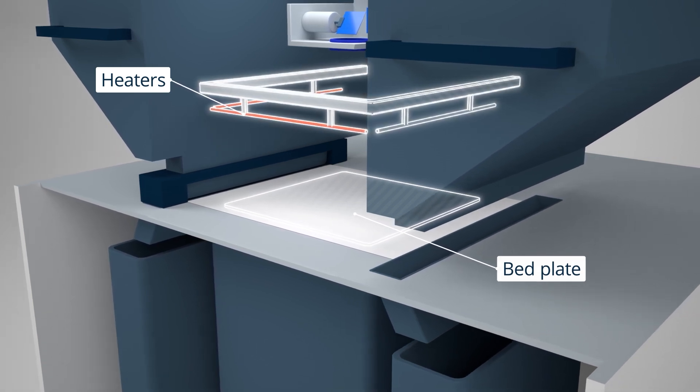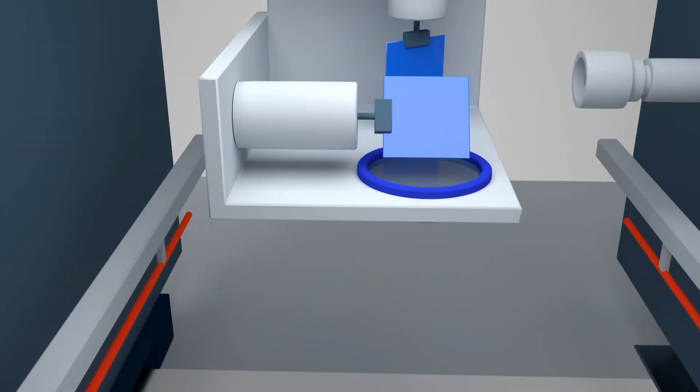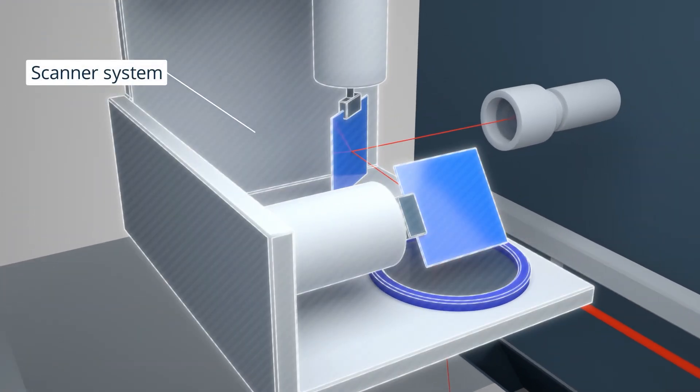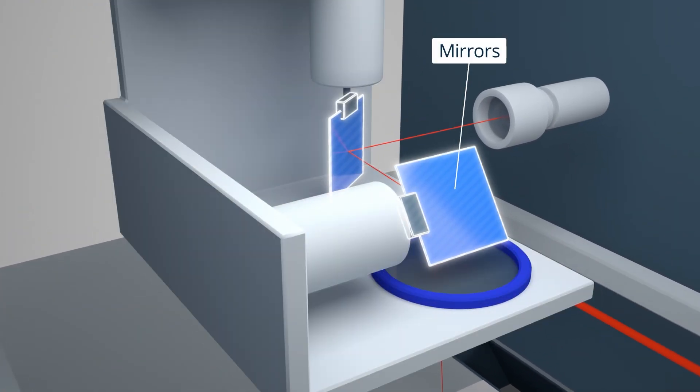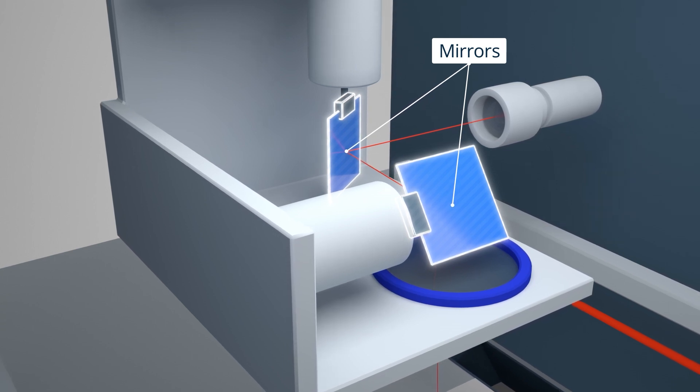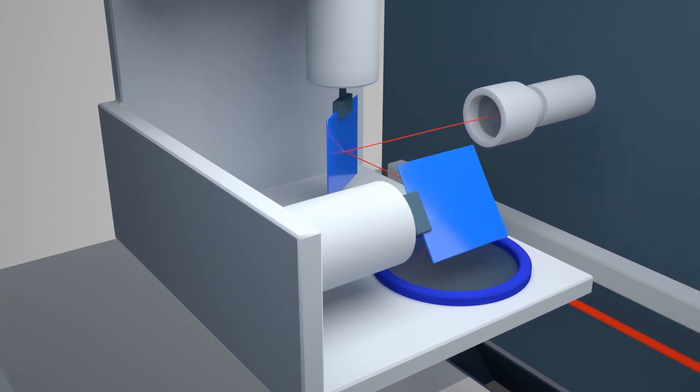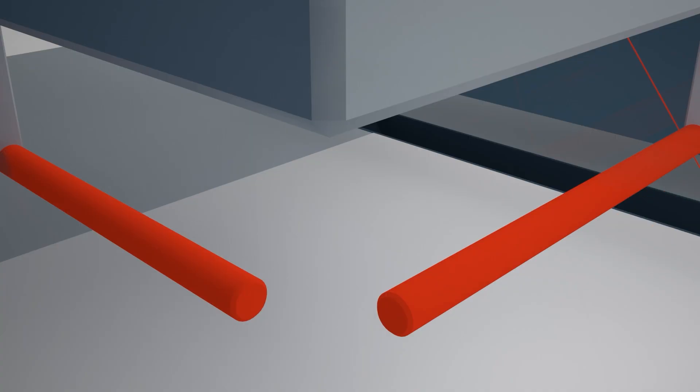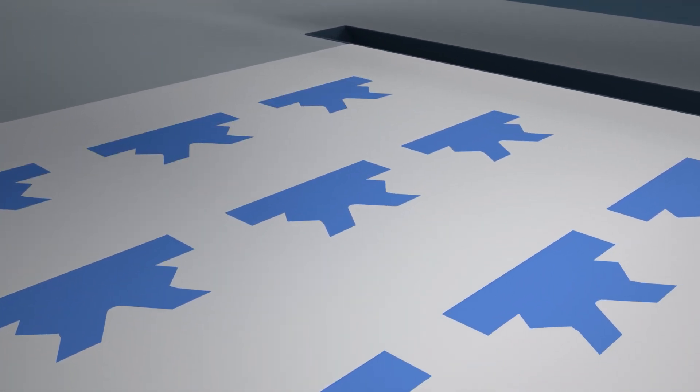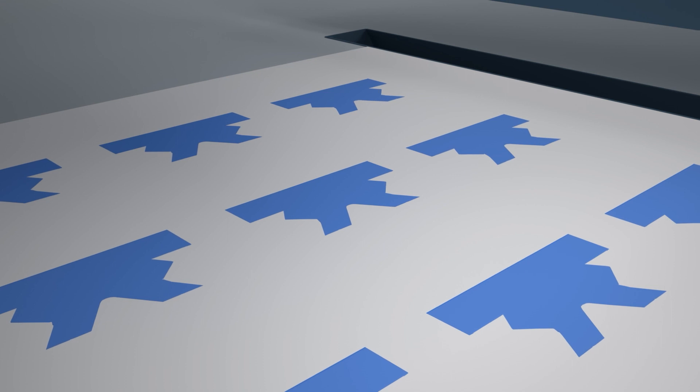This makes it easier for the laser to solidify the part. The laser directs its beam to the scanner system which consists of a mirror controlled by a galvo motor system. The beam traces out the first layer of the part's cross-section and heats the powder to the material's melting point. The particles are then sintered together.